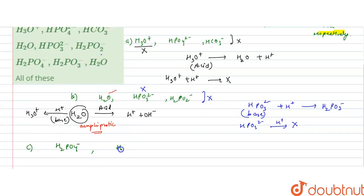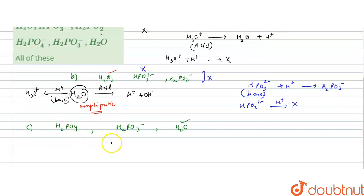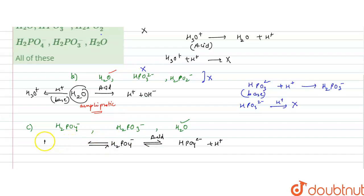Moving to option C: H₂PO₄⁻, H₂PO₃⁻, and H₂O. We already established H₂O is amphiprotic. Now checking H₂PO₄⁻ — when it releases H⁺, it forms HPO₄²⁻, acting as an acid. When it accepts H⁺, it forms H₃PO₄, acting as a base. So H₂PO₄⁻ is an amphiprotic species.